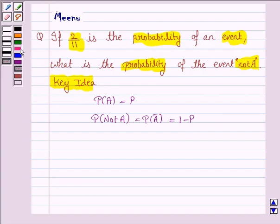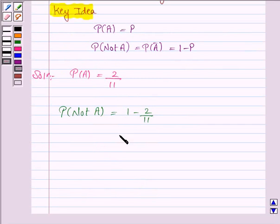Let us now move on to the solution. We are given that the probability of an event A is 2 by 11. So the probability of the event not A is 1 minus 2 by 11, which is equal to 9 by 11.